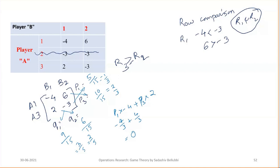Verifying with the second column: (1/3)(6) + (2/3)(−3) = 6/3 − 6/3 = 0. The value of the game is 0 from both calculations, confirming the result. Since the value of the game is 0, the given problem is a fair game.